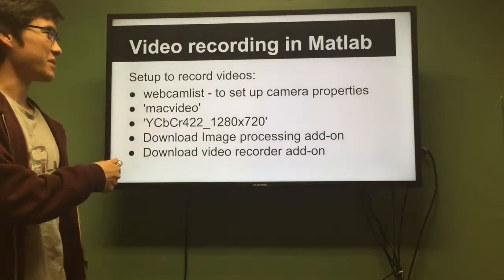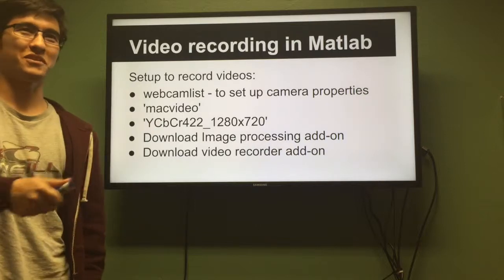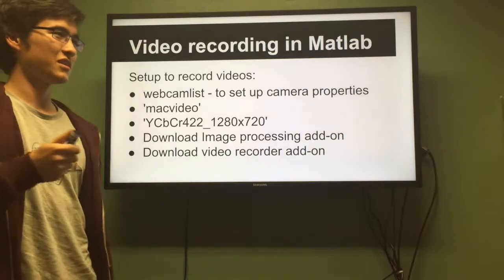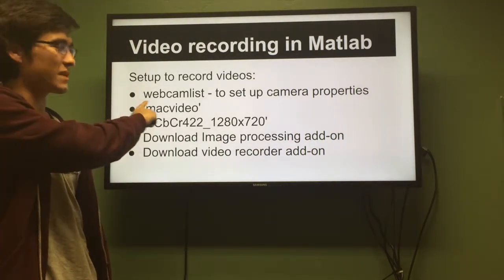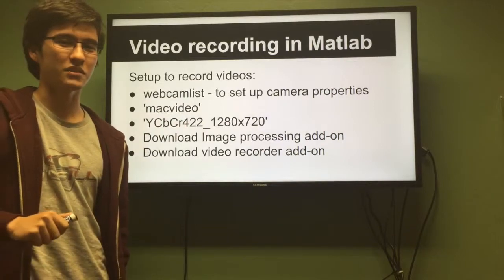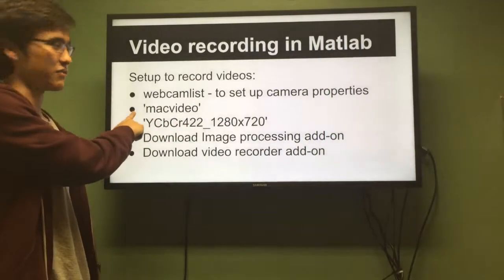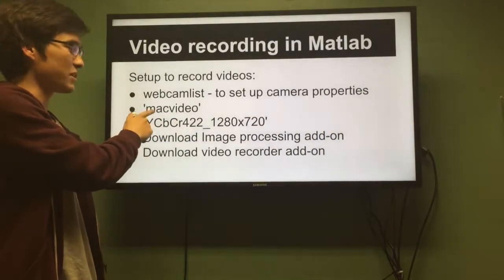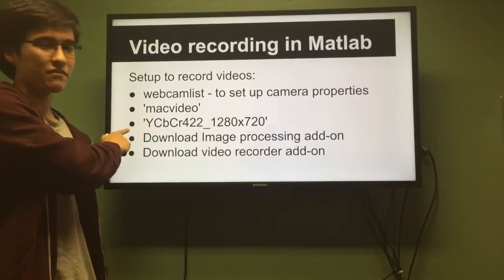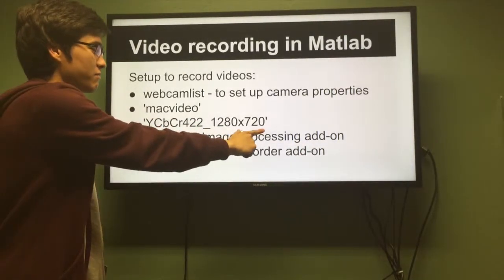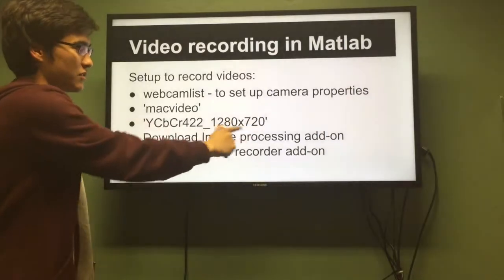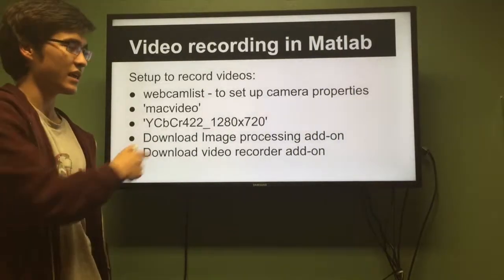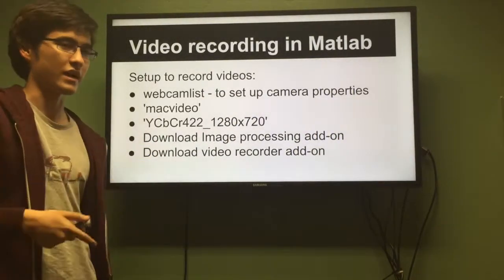My part of the programming was trying to take a video recording through the computer. To record through MATLAB, you have to first use the webcam list to set up your camera properties. Every computer has different properties — Mac computers will be called Mac videos while Windows computers will be called window videos. You also have your scale of the frame, and you have to change that depending on your camera properties. You also have to download the image processing add-on and the video recorder add-on through MATLAB.